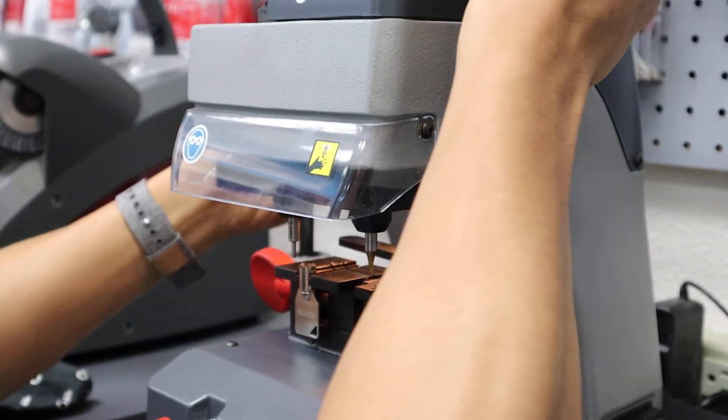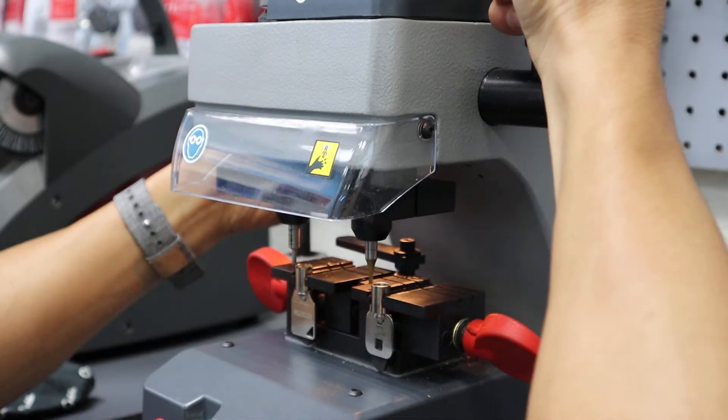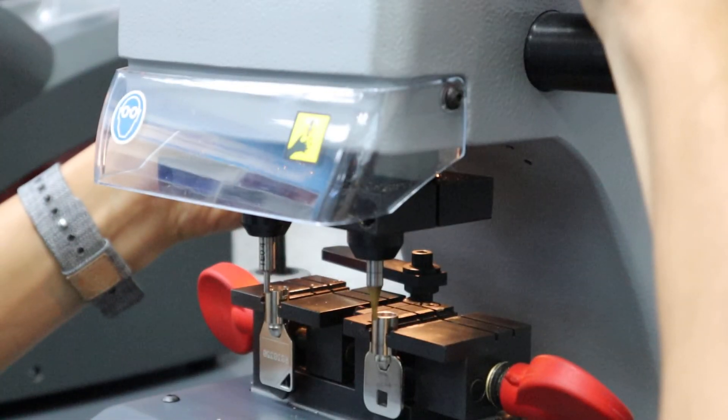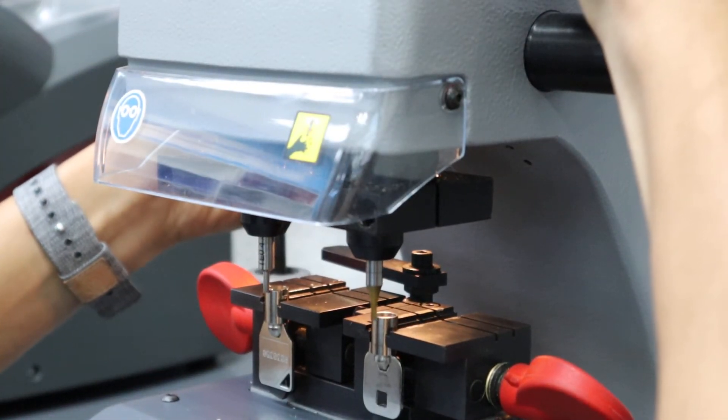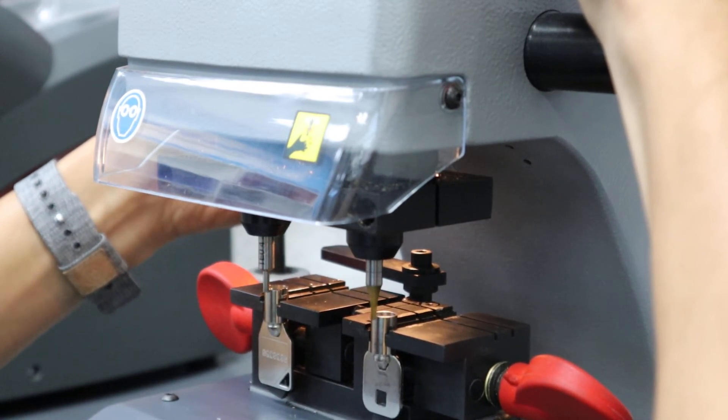Once you have those on, you can get started. I'm going to turn on the machine and start with the first notch on this side. Okay, you hear it cutting—I come in from the side, I go back and forth lightly to make sure it's cut.